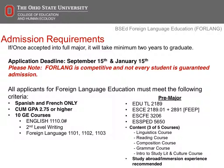The application deadline occurs every September and January 15th. All applicants for Foreign Language Education wanting to teach either Spanish or French must meet the following criteria: students must have a cumulative GPA of 2.75 or higher with completion of 10 GE courses. Of the GE courses, English 1110, a second-level writing course, and Foreign Language 1101, 1102, and 1103 are required.